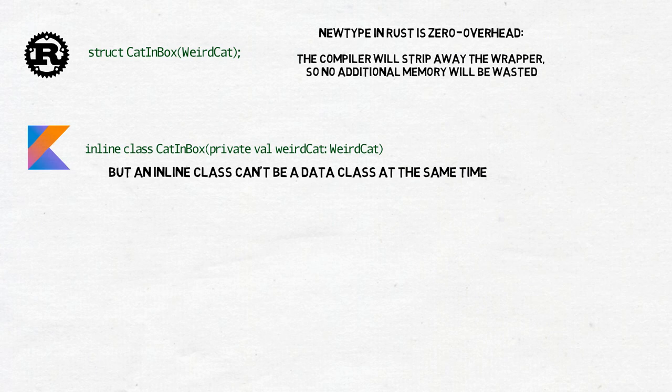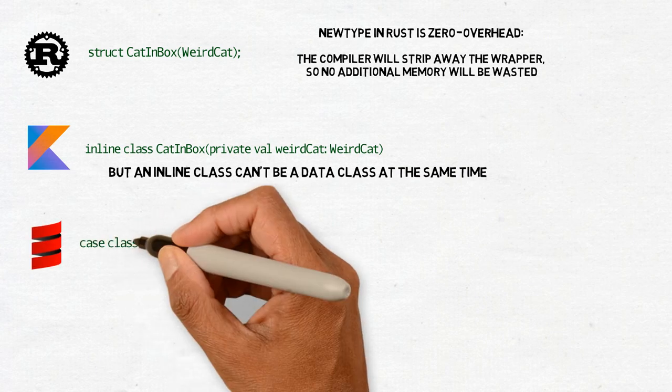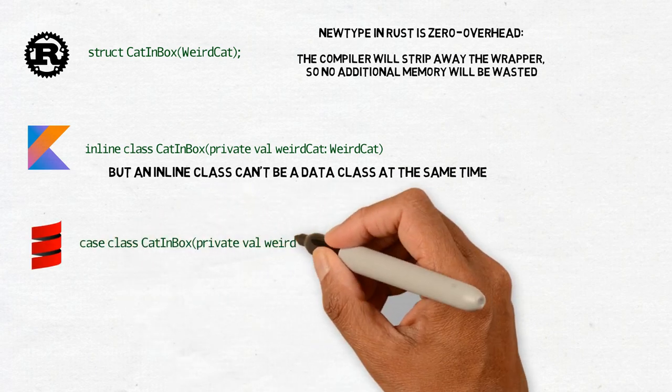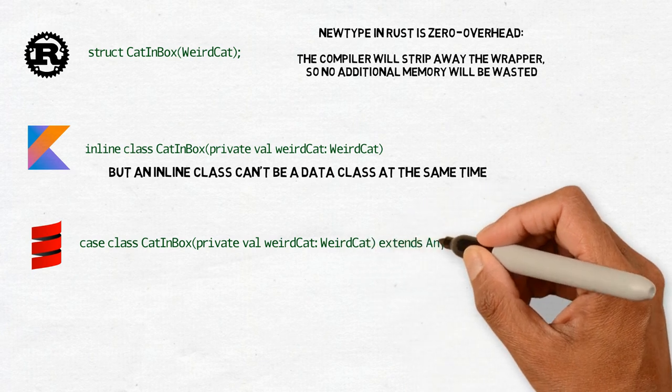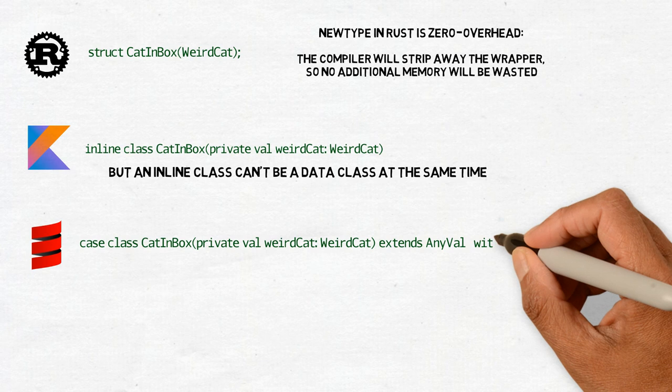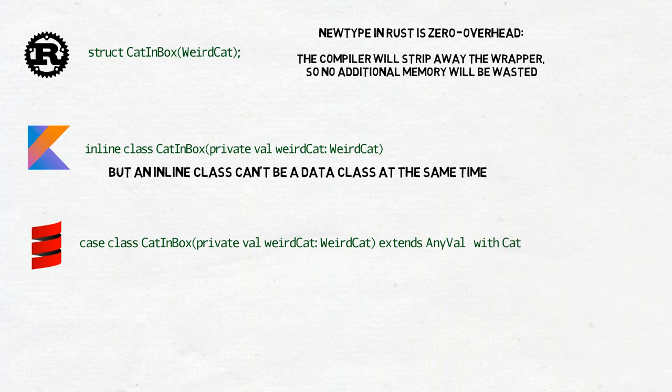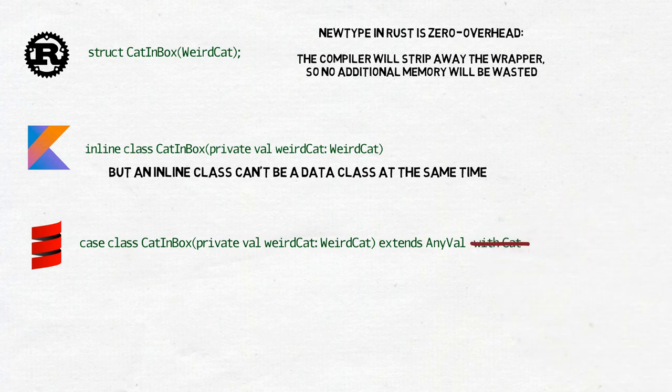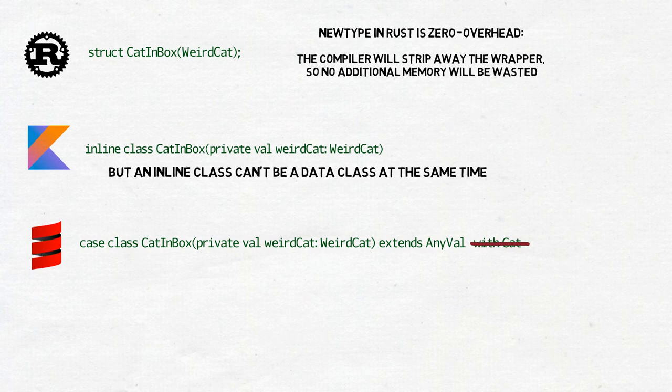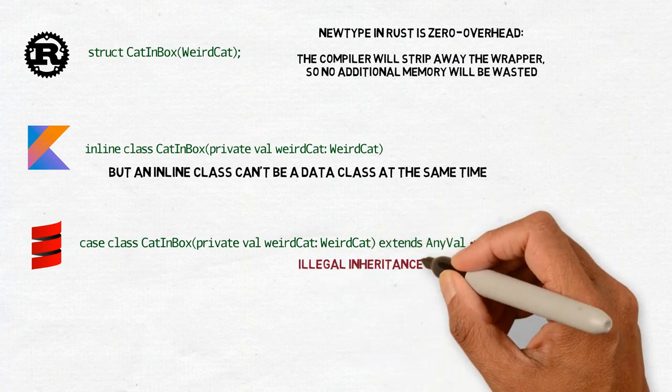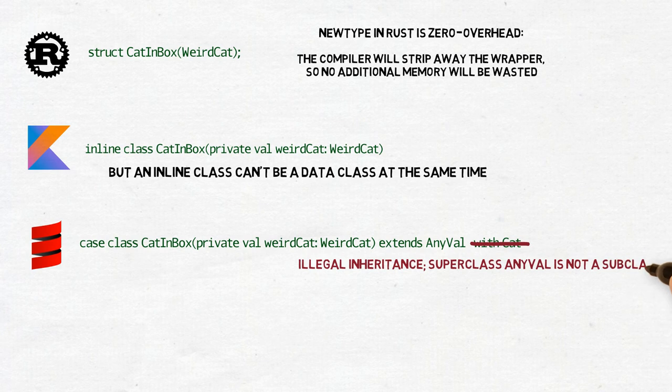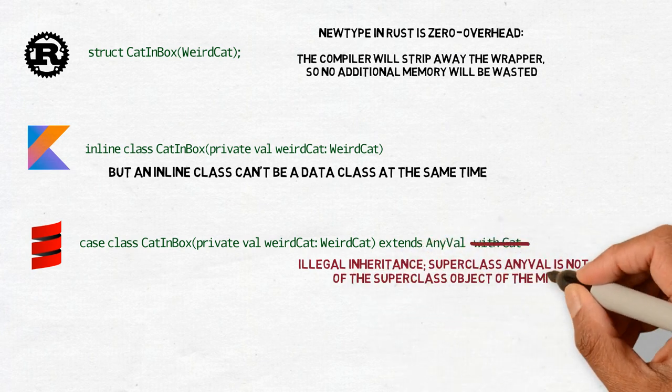In Kotlin, the same can be achieved with the experimental inline class. In Scala, it's also possible, but not in every case. You can do it by making your wrapper class extend a special superclass, anyval. Unfortunately, it means that you are no longer allowed to mix in the Cat trait. This will give you the error that this is illegal inheritance. Superclass anyval is not a subclass of the superclass object of the mix-in trait Cat.